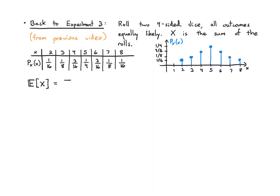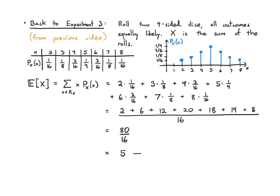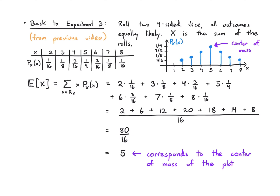The expected value of X is the sum over the range of x times the PMF: 2×(1/16) + 3×(1/8) + 4×(3/16) + 5×(1/4) + 6×(3/16) + 7×(1/8) + 8×(1/16). Adding these up gives 2+6+12+20+18+14+8, all over 16, which is 80/16 = 5. This corresponds to the center of mass visible on the plot — the symmetric PMF is centered at 5, confirming the idea that expectation is the average value we expect to see.